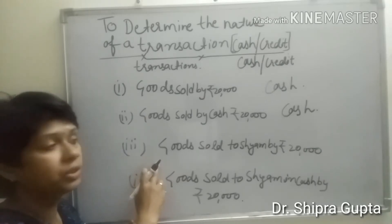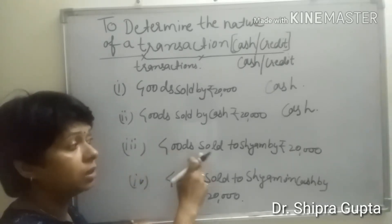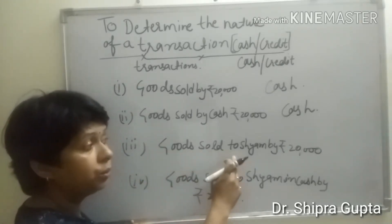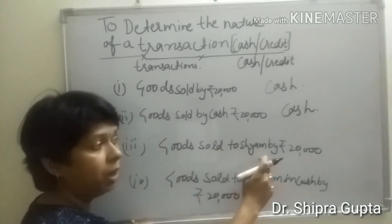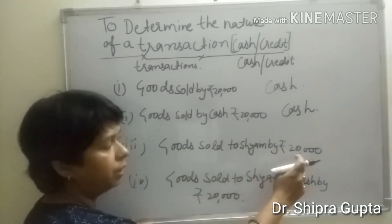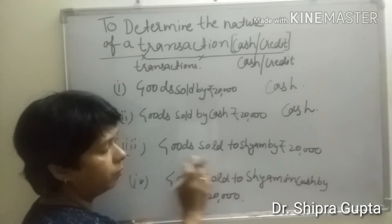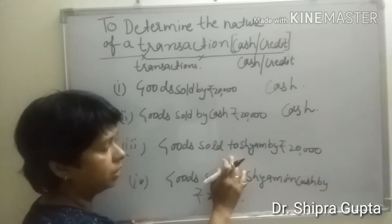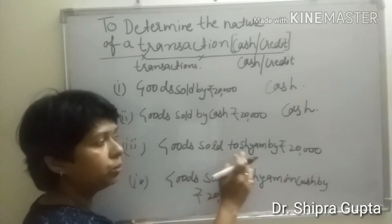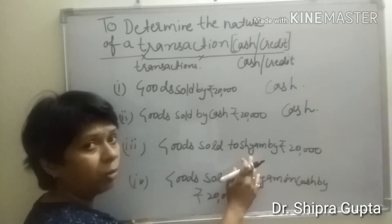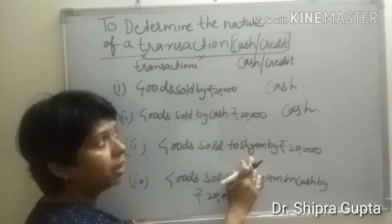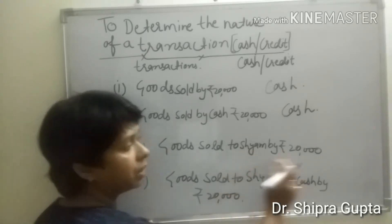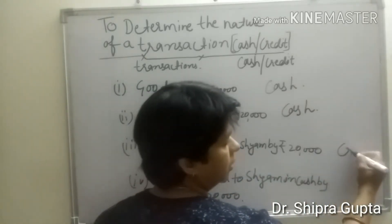In the third transaction, goods sold to Shiam by rupees 20,000. In this transaction, goods are sold to Shiam but not by cash. So this transaction is related to a credit basis.